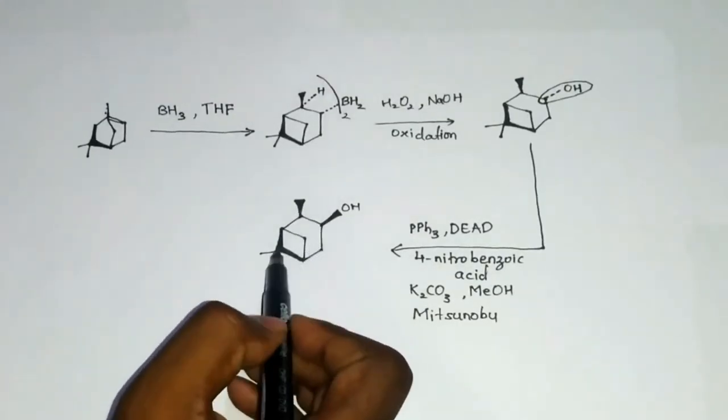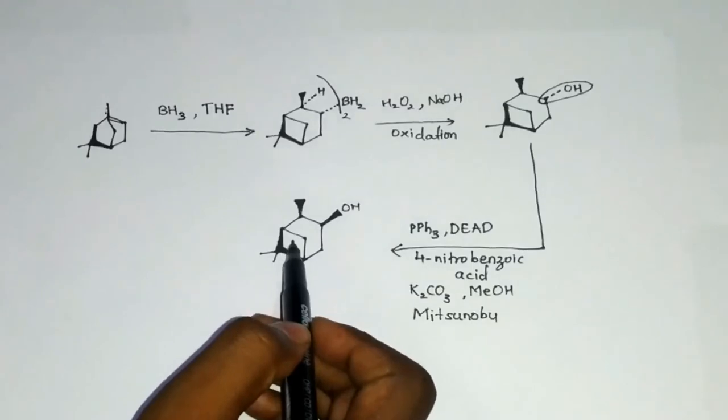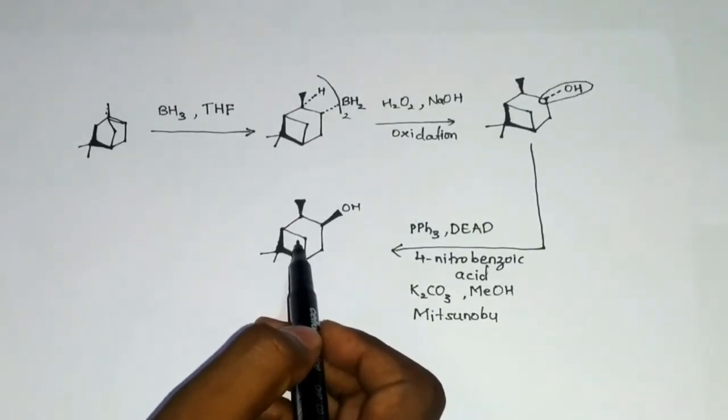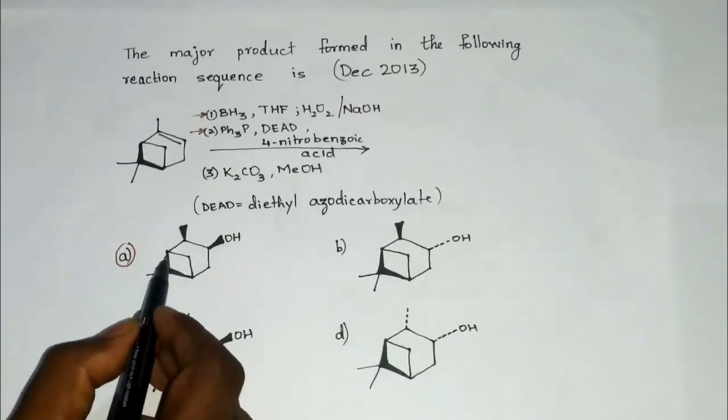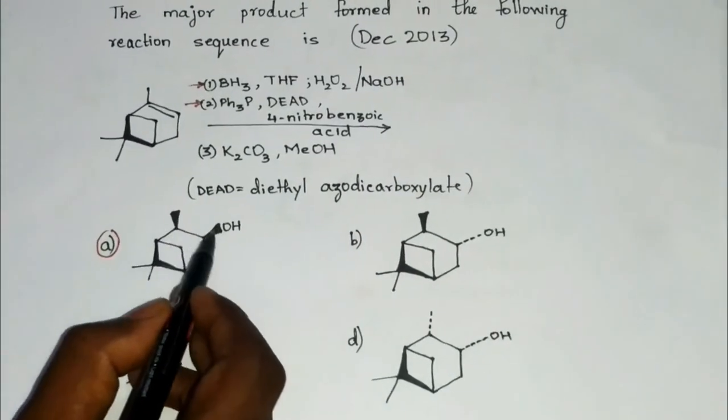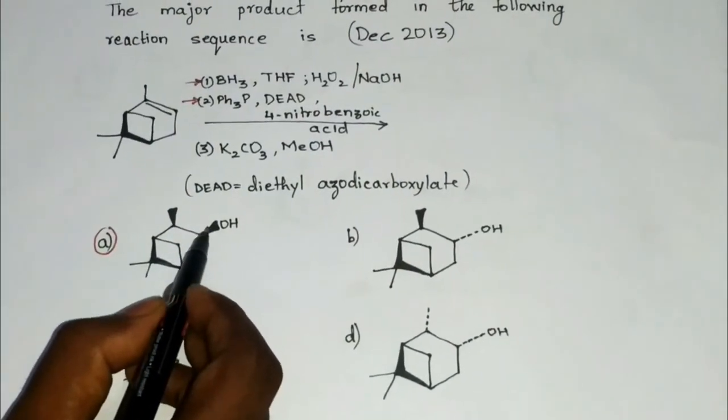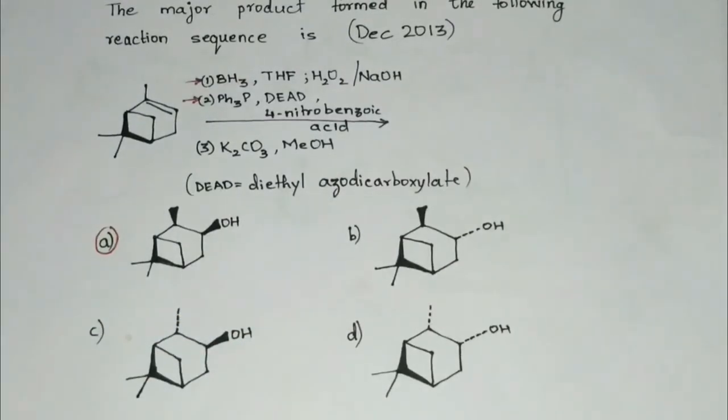So option A, where the stereochemistry of all the groups are on the same side of the plane of the paper, becomes the right choice.